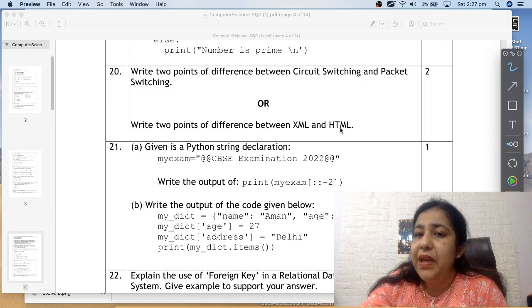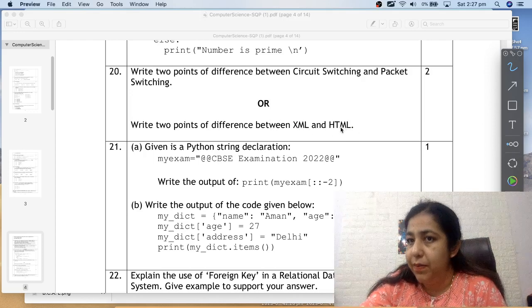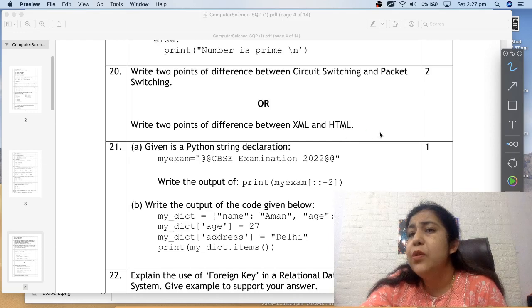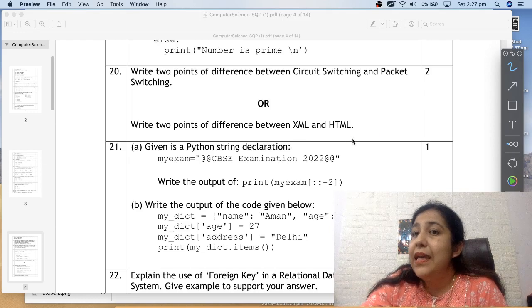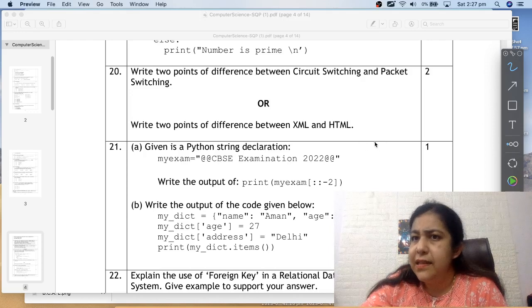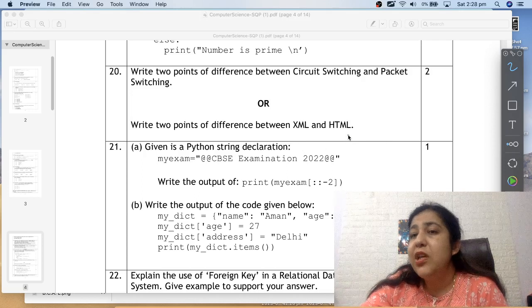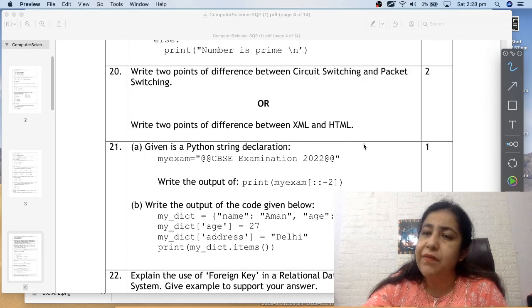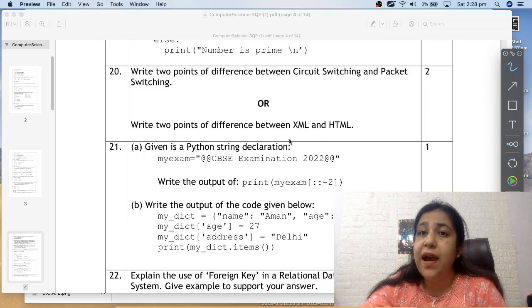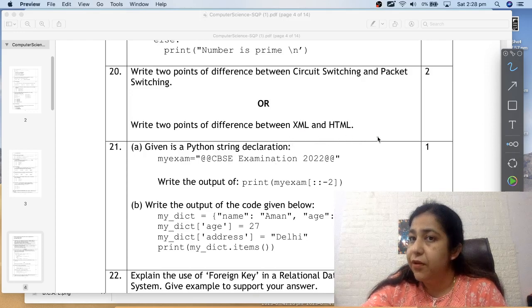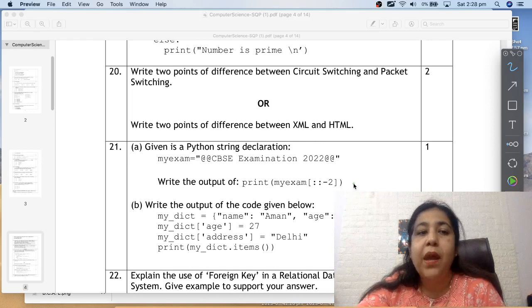In packet switching, there is no need of prior connection. The whole message is divided into smaller parts called packets. They can be in connection-oriented or connection-less way. The example of circuit switching is telephones, the landline cables. Packet switching is the internet. Write two points of difference between XML and HTML. XML is extensible markup language. HTML is hypertext markup language. HTML is used for website designing. XML is used for managing data on websites. HTML is case insensitive, XML is case sensitive. HTML has a predefined set of tags. We create tags in XML ourselves. These differences are more than enough for two marks.